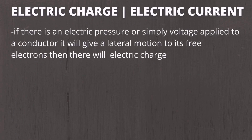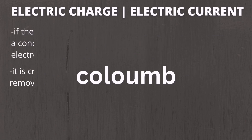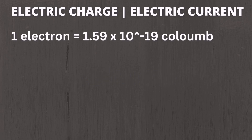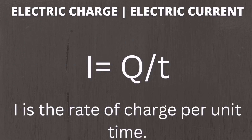Our next topic is electric charge and electric current. If there is an electric pressure, or simply voltage, applied to a conductor, it will give a lateral motion to its free electrons. Electric charge is created when free electrons are transferred to or removed from an object. The unit of charge is in coulombs. For a negatively charged electron, it is 1.6 times 10 raised to negative 19 coulombs, or one coulomb is equal to 6.28 times 10 raised to 18 electrons.